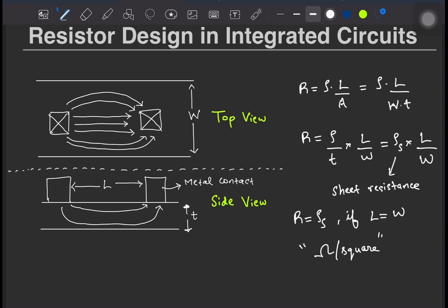Let's see what this parameter rho s means to us as an IC designer, and before that, just a quick remark that rho s is rho over T, and rho is 1 over sigma, sigma being the conductivity of the material, which is approximately expressed as Q times the mobility of majority carriers times the activated dopant density N.